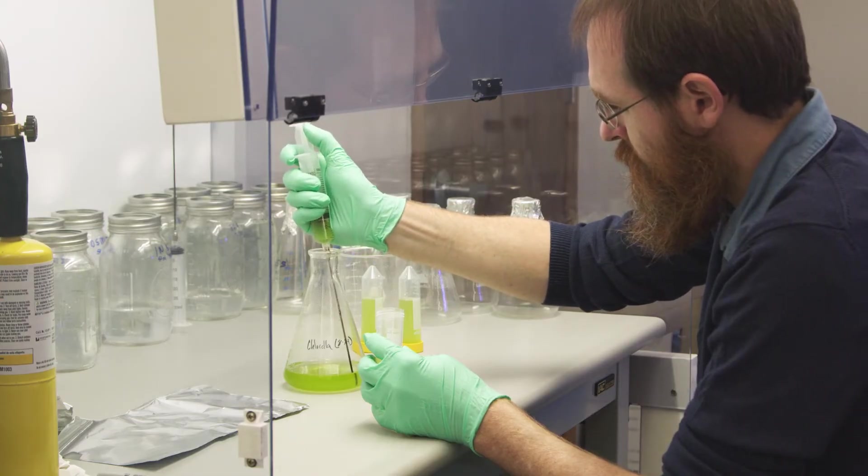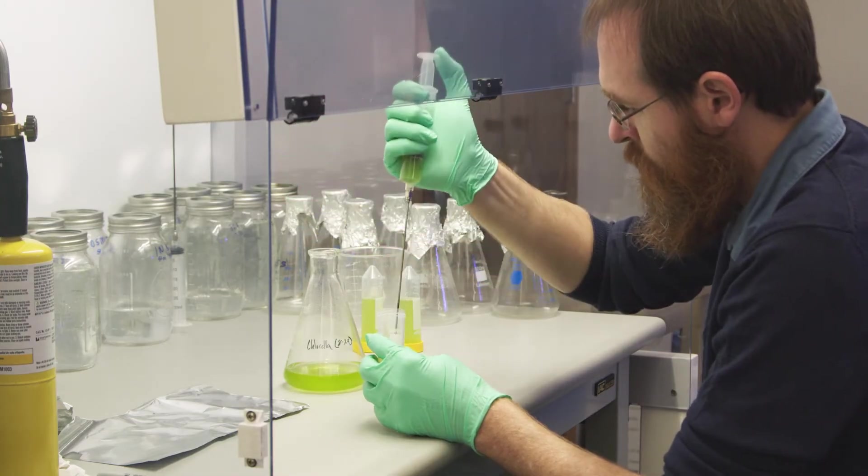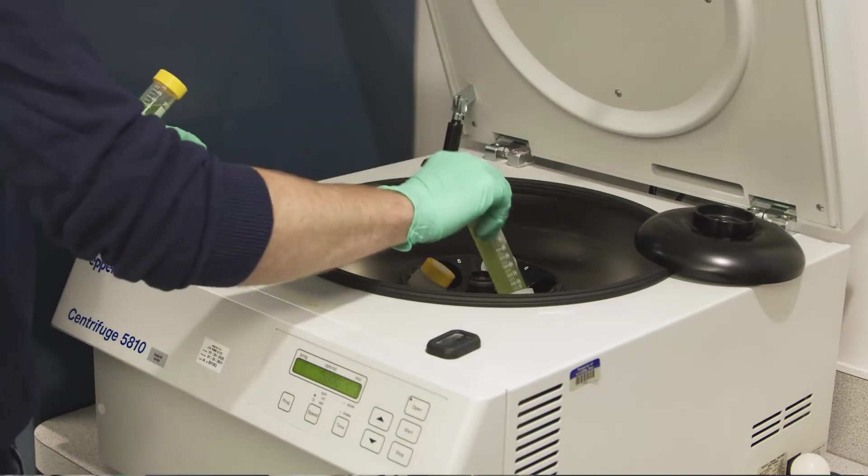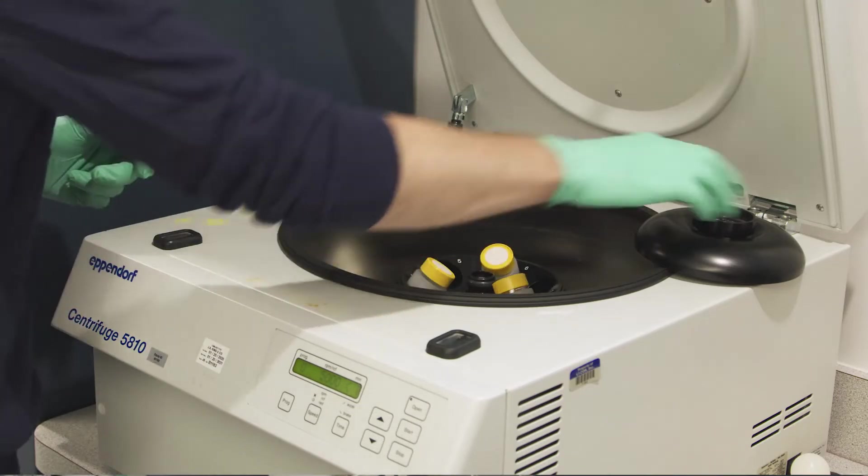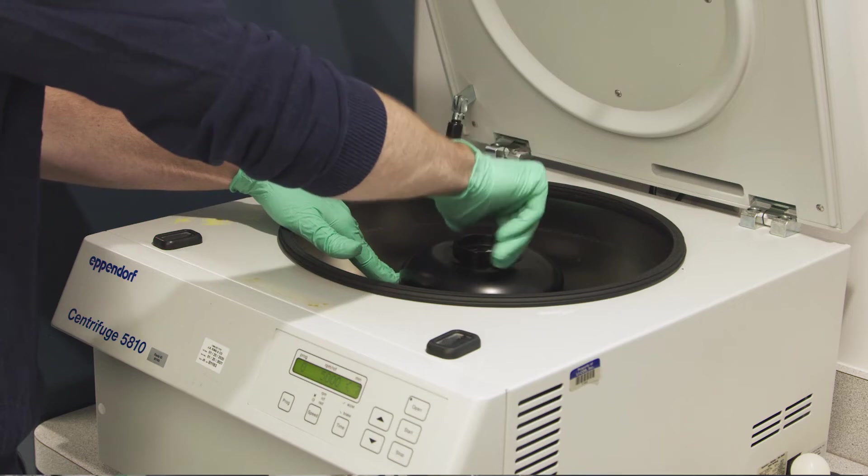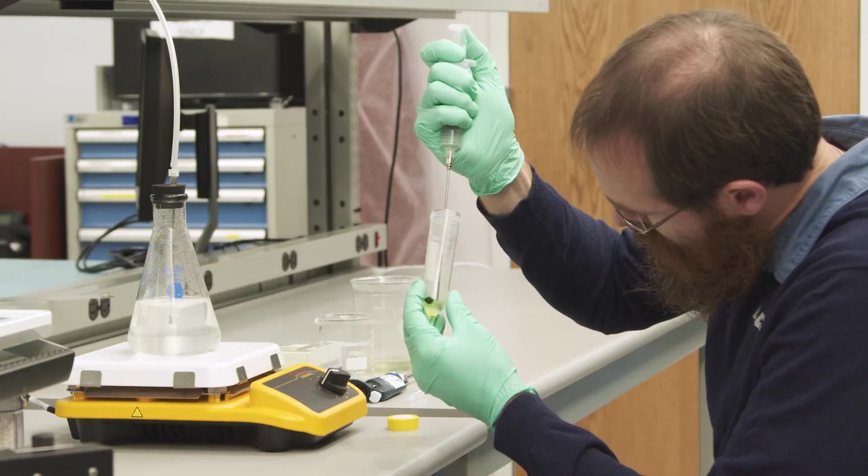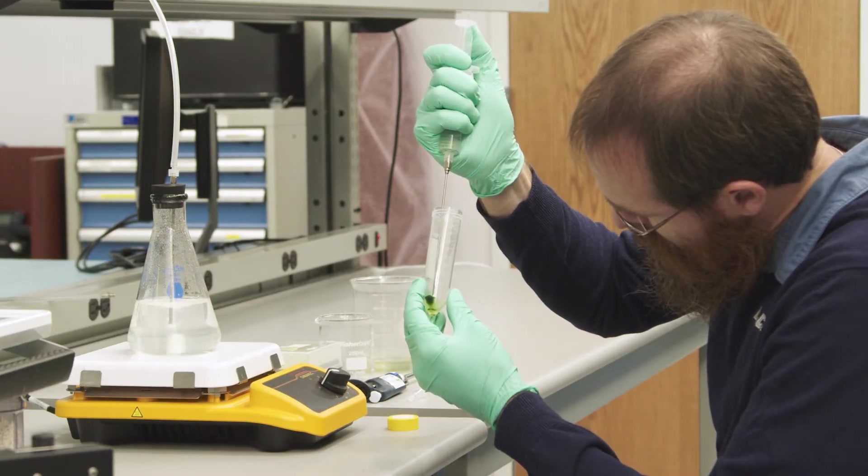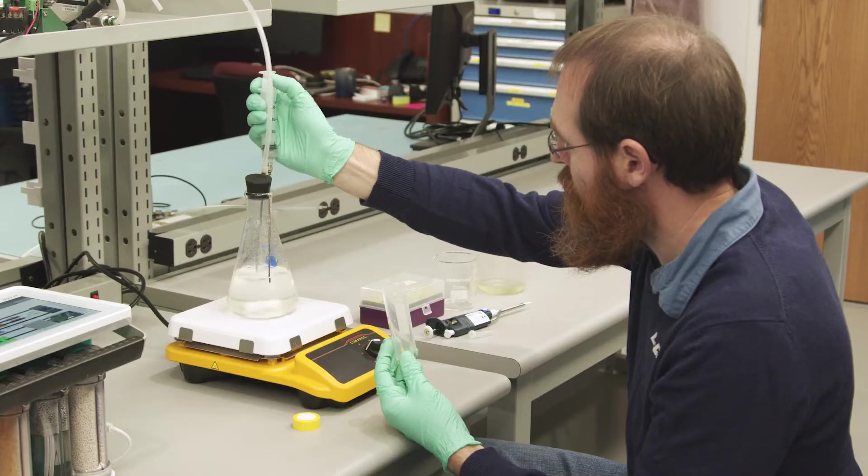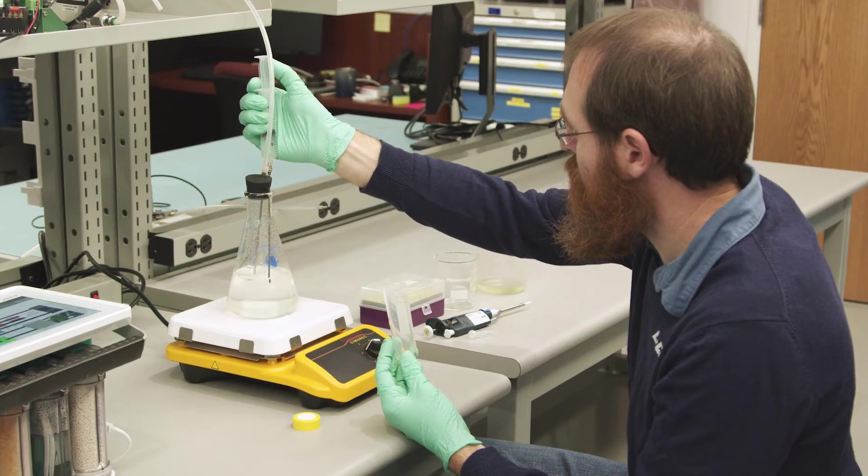So we're going to pull some cells from a culture that I've had growing for a couple of days. These cells are going to go into the centrifuge and we're going to spin them down to separate them from the growth media that they're currently in. I'm going to re-suspend them in some growth media that I set up this morning to bubble with 400 ppm tank air so that it's pre-equilibrated at my measurement conditions.